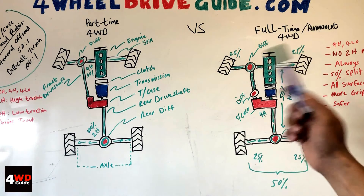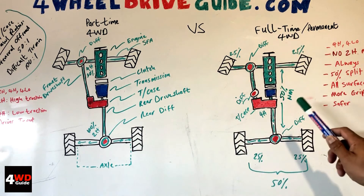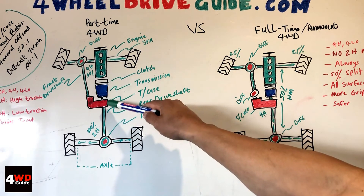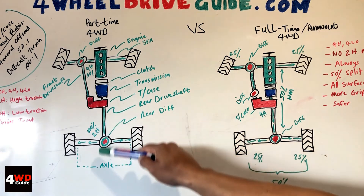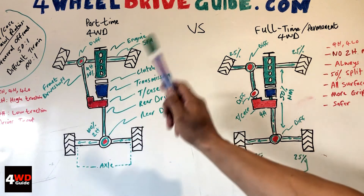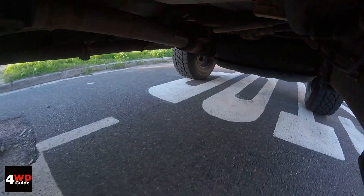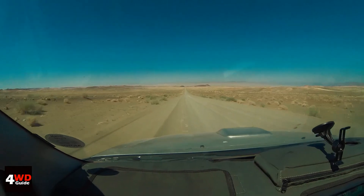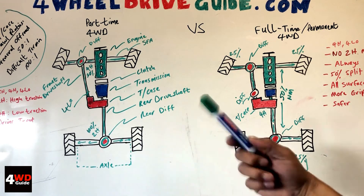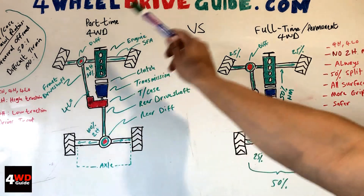Every single four-wheel drive, whether part-time or full-time, has a front diff, a transfer case, and a rear differential. You will always have a front drive shaft and a rear drive shaft. On a part-time four-wheel drive, torque from the engine is transferred to the transmission, then through the rear drive shaft to the rear differential, which manages the power between the two rear wheels. A part-time four-wheel drive is normally in 2H — only when surface traction is low will you engage 4H. The differential is the component that allows your left and right wheel to rotate at differing speeds, which is important for cornering since the outside wheel has to cover a wider circumference than the inside wheel.